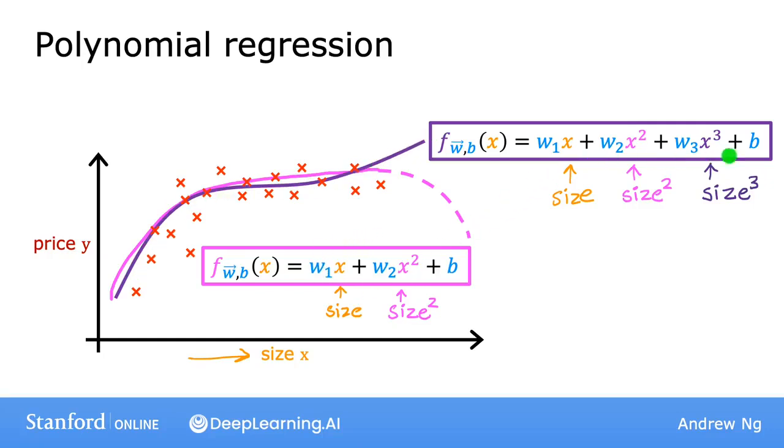These are both examples of polynomial regression because you took your optional feature x and raised it to the power of 2 or 3 or any other power. And in the case of the cubic function, the first feature is the size, the second feature is the size squared, and the third feature is the size cubed.